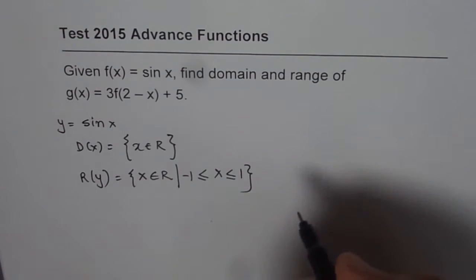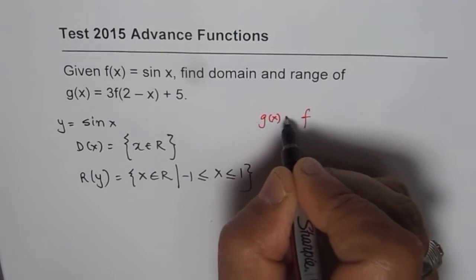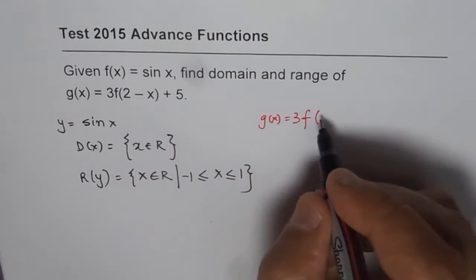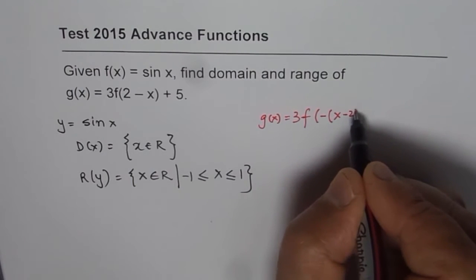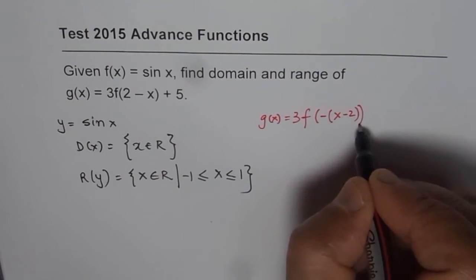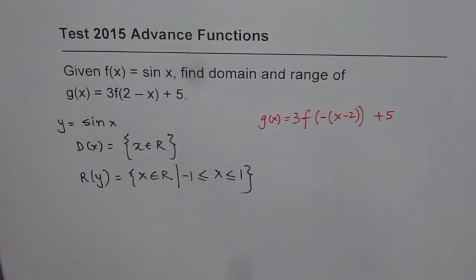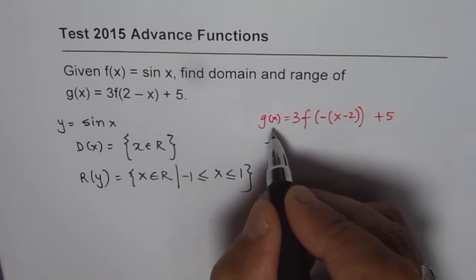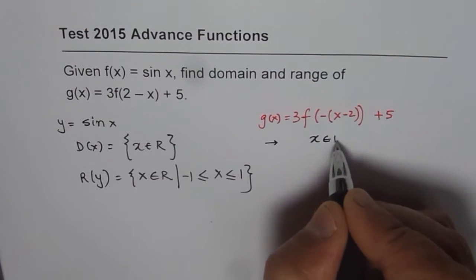Now when we are talking about the transformed function, let me write g of x equals to 3 times f of 2 minus x, which I prefer to write as minus of x minus 2, plus 5. Now since the domain is all real numbers, then for g of x, domain is also going to be all real numbers.